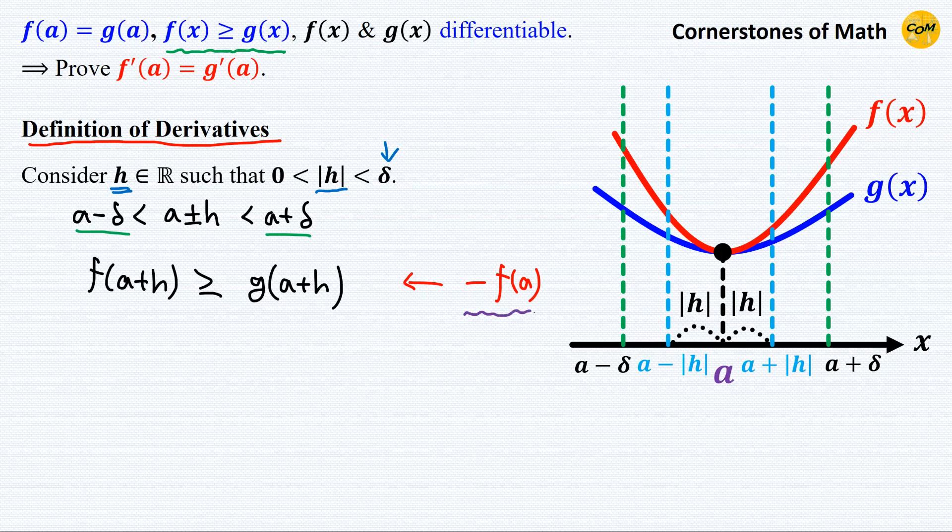Next, we subtract f(a) on both sides. And since f(a) equals g(a), we can write minus f(a) here and minus g(a) here, since they are the same.